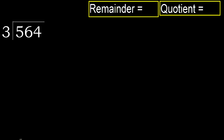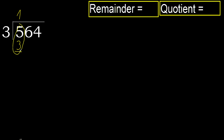564 divided by 3. 5 is not less, therefore with 5 and 3, multiply by which number is nearest to 5 but not greater. 3 multiplied by 2 is 6, which is greater. Multiply by 1: 3 is not greater. Subtract: 5 minus 3 equals 2. Next, bring down to get 26.